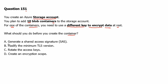Option A: Generate a shared access signature. Shared access signature is used to secure delegated access to resources, so it is related to access and not related to encryption of the data. Therefore, this is not the correct one.